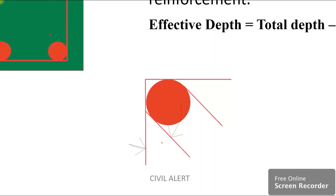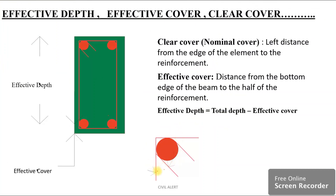If the beam does not carry a heavy load, the stirrups are open. If the stirrups are open, we will hook the stirrups at a bend. The side face reinforcement stirrup hook is at a 135-degree angle. The distance is 75 mm or 10 times the diameter of the bar, whichever is applicable. Here, diameter refers to the diameter of the bar.